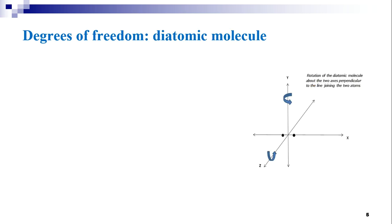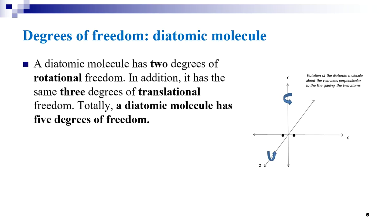Now let us look into the degrees of freedom of a diatomic molecule. The possible motions of a diatomic molecule are shown in the figure. A diatomic molecule has two degrees of rotational freedom. In addition, it has 3 degrees of translational freedom, giving a total of 5 degrees of freedom. The molecules of a diatomic gas — for example, HCl, CO, O₂, Cl₂ — have translational as well as rotational kinetic energy. A diatomic molecule can have rotational kinetic energy about two axes at right angles to its own axis.